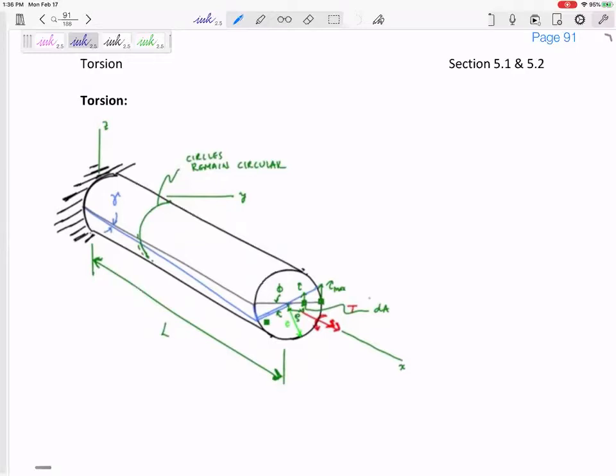Torsion is a twisting moment about the axial direction. It's a twist like this. That's torsion. So let's write a twisting moment in the axial direction. My thumb is pointing in the axial direction.